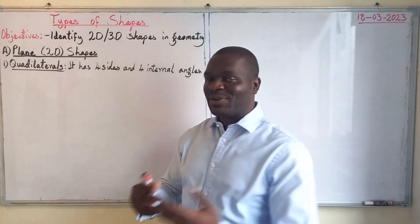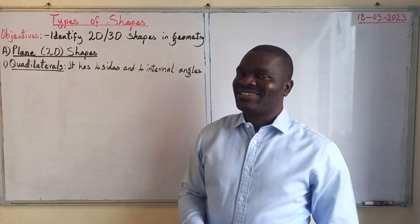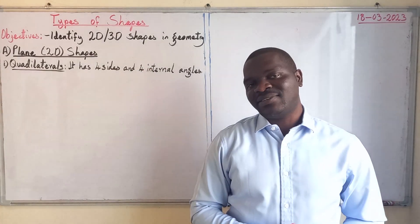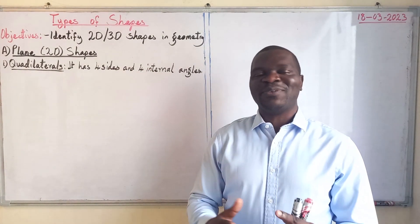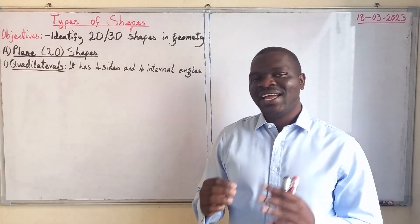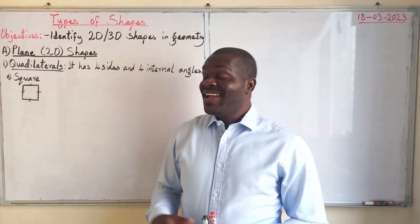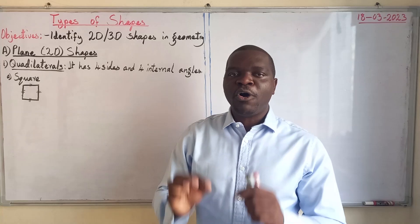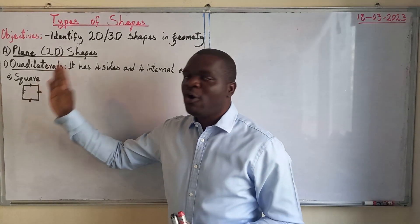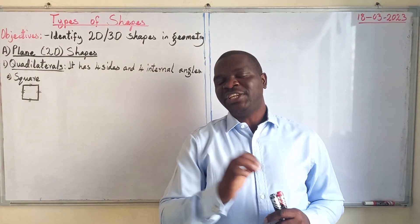The first type of plane shapes we want to look at are called quadrilaterals. Quadrilaterals have four sides and four internal angles. The first shape is a square — a square has four equal sides and four internal angles, each equal to 90 degrees.